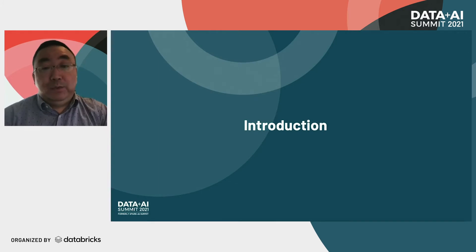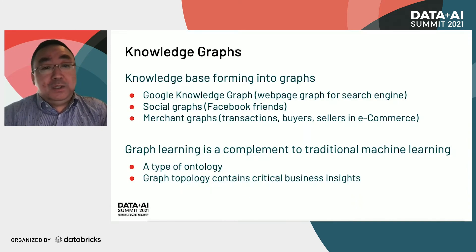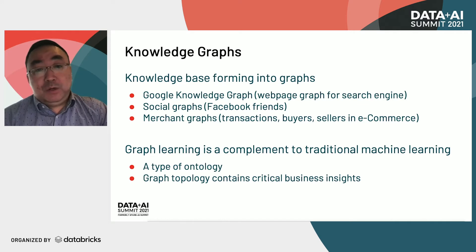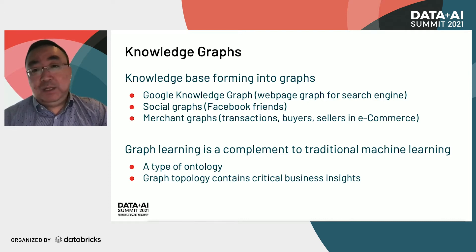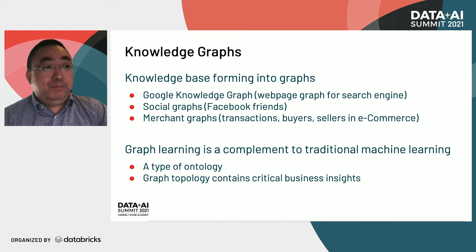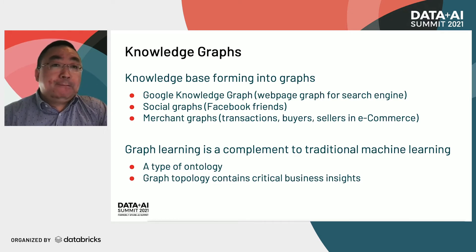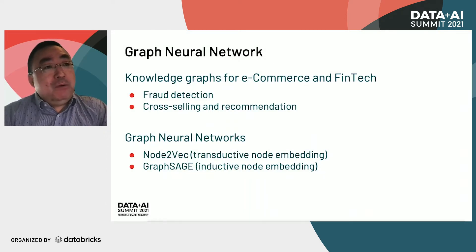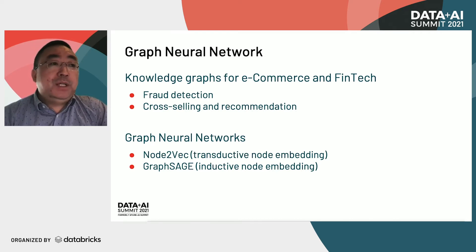Let's provide some background and introduction. What are large-scale graphs? Large-scale graphs are large-scale entities forming into graphs. There are some very good examples, like Google's web page graph for their search engine, social graphs in Facebook friends, merchant graphs in e-commerce — for example, transaction graphs and buyer-seller relation graphs. Graph learning is a complement to traditional machine learning, and it focuses on graph topology to find critical business insights.